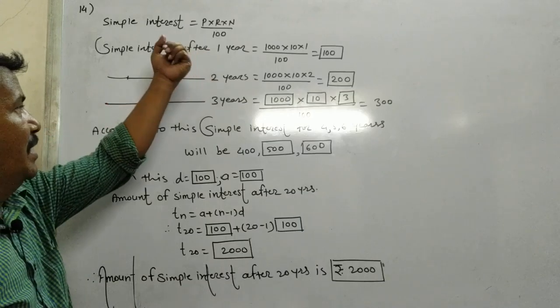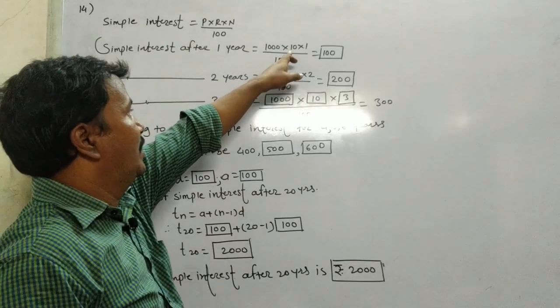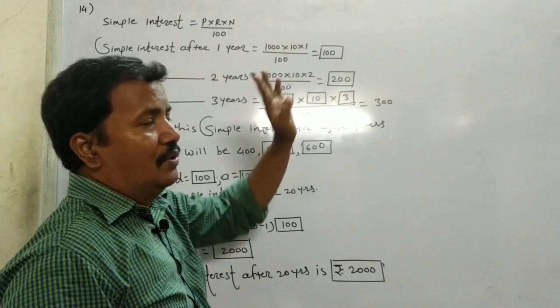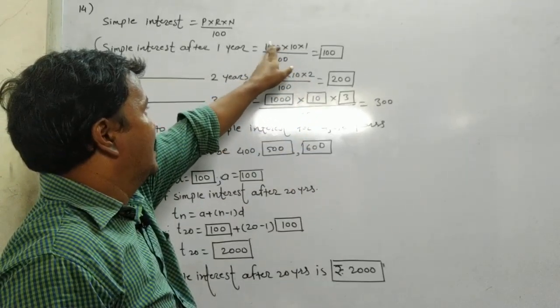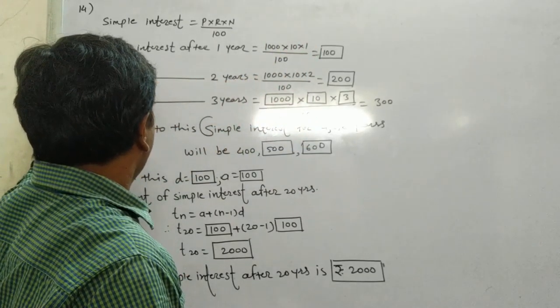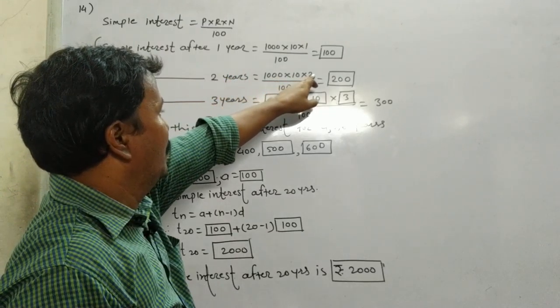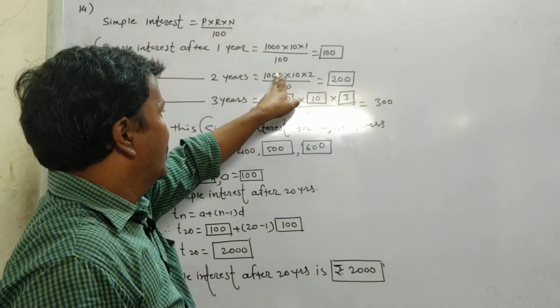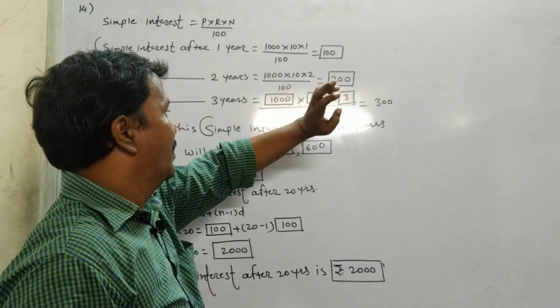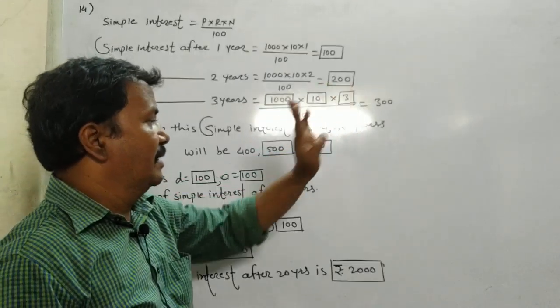Simple interest after 1 year: 1000 into 10 into 1 divided by 100 equals 100. Simple interest after 2 years: 1000 into 10 into 2, equals 200. After 3 years: 300.